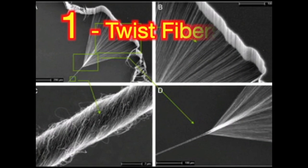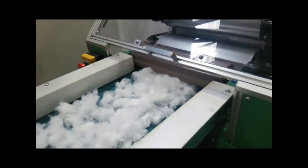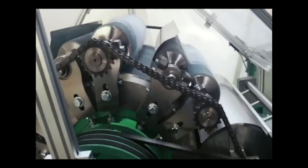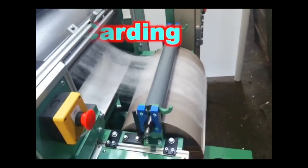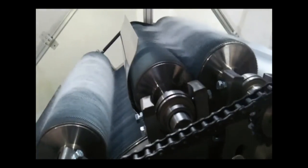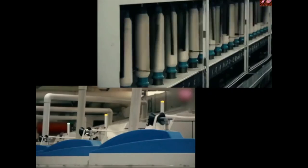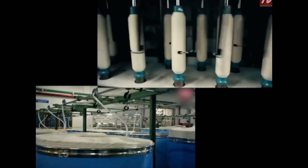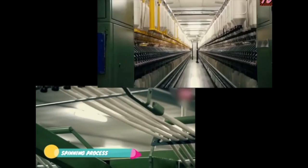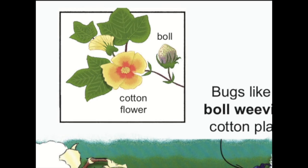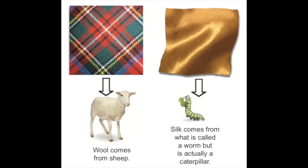Step 1: Twist Fibers. We start with fibers. Line up all the short fibers in the same direction. Twist the short fibers together to make long, strong threads.